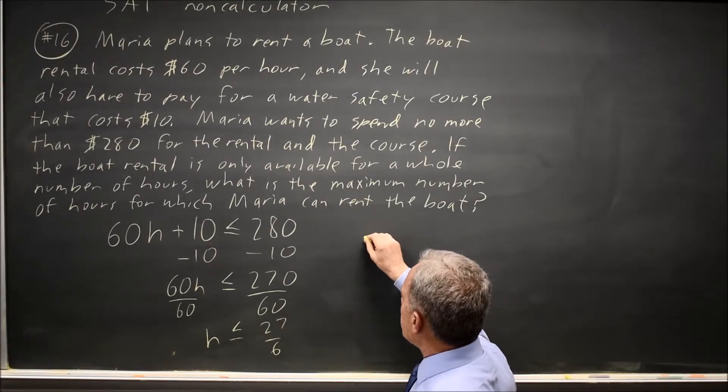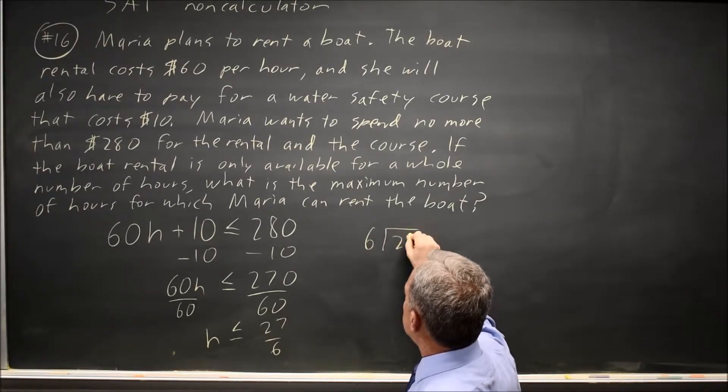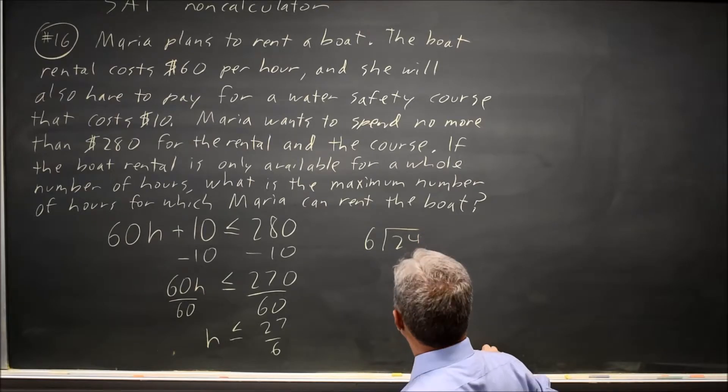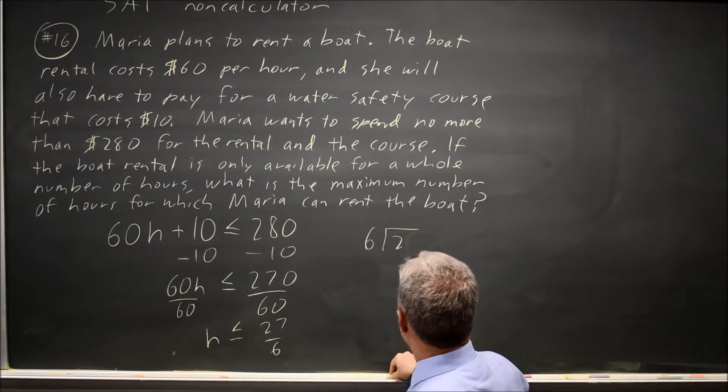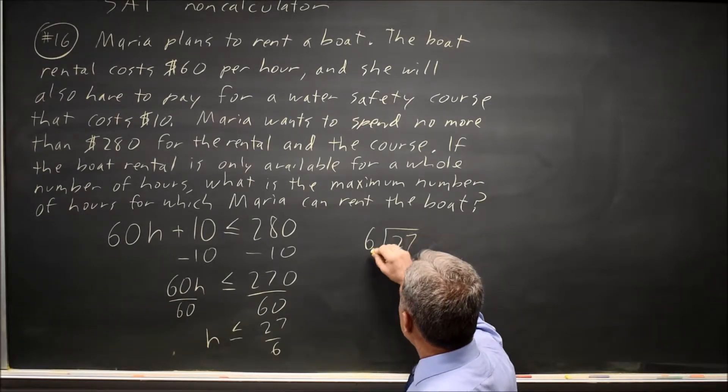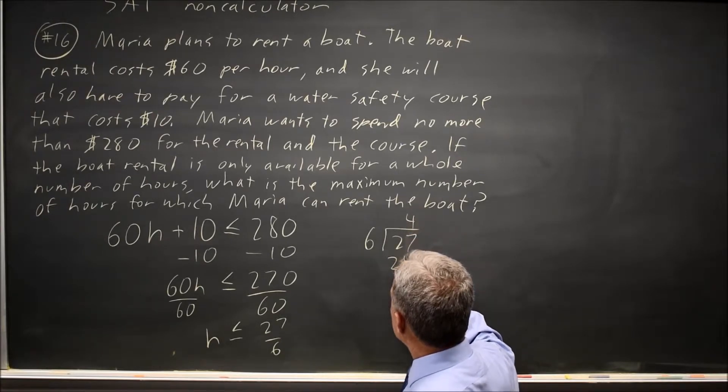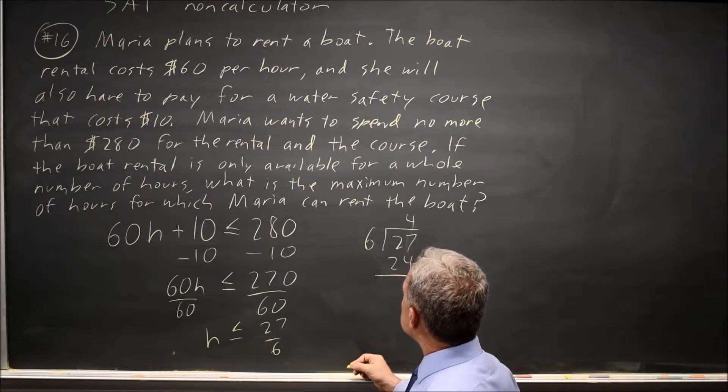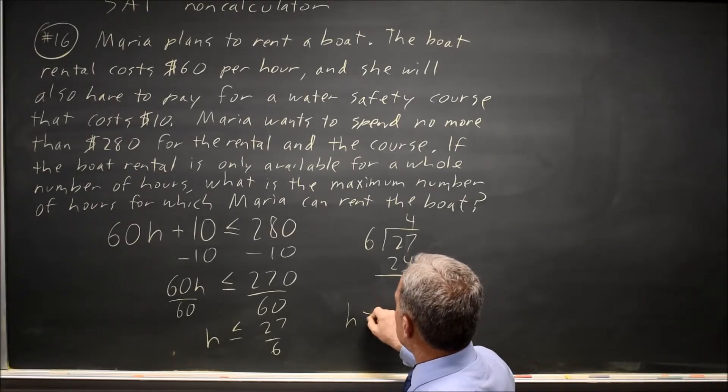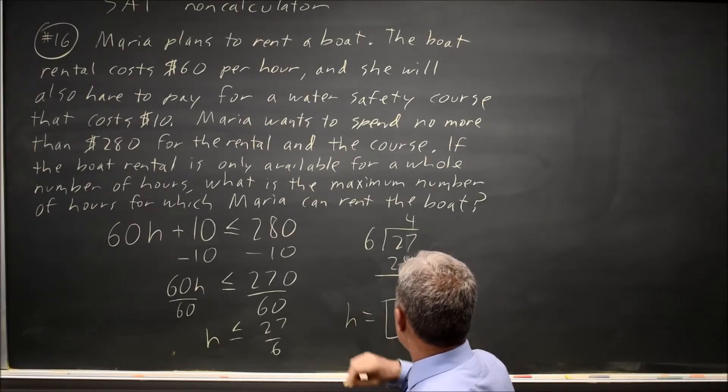To find the exact value of H, I can take 6 into 27. 27, my chalk's jumping ahead, and I know that 6 times 4 is 24, which leaves a remainder of 3, which is less than 6, so 4 is the largest number of whole hours.